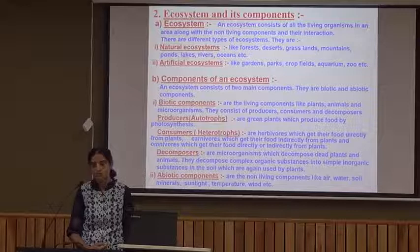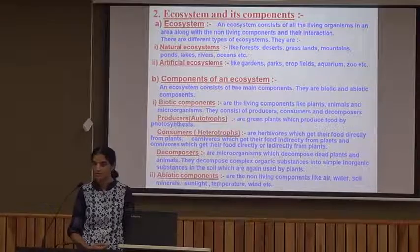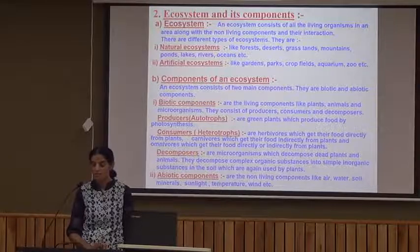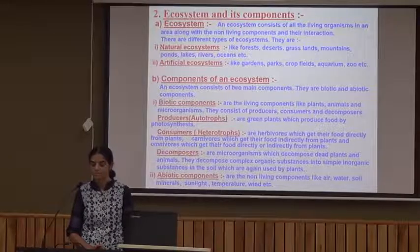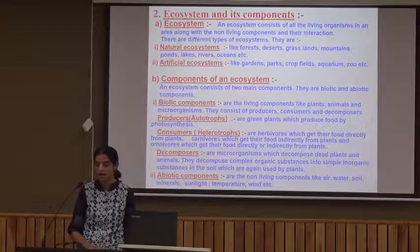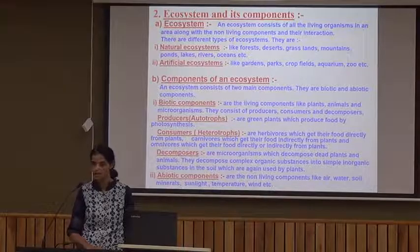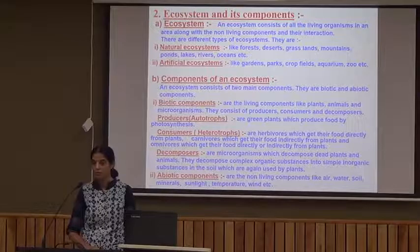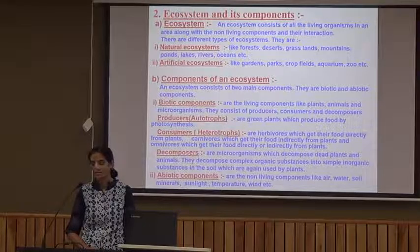Natural ecosystems include forests, deserts, grasslands, and mountains, where the ecosystems are managed by organisms themselves. Artificial ecosystems like gardens, parks, crop fields, and aquariums require human interference and thus come under the artificial ecosystem category.